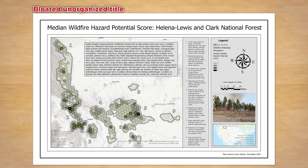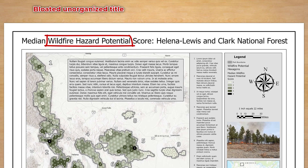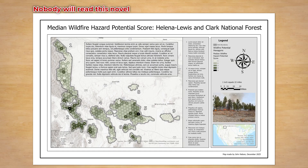The title is way too long and lacks any kind of hierarchy. 'Wildfire Hazard Potential' is what this map is about — 'median' and 'score' are unnecessary details for a title, plus they're already in the legend. The park's name is context suitable for a subtitle. This is way too much text for a layout.